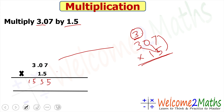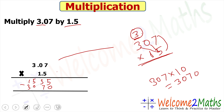Next, we multiply 307 by 1, but since 1 is in the tens place, we actually multiply 307 by 10, which gives 3070. Now we add the two partial products: 1535 plus 3070. Adding: 5 plus 0 is 5; 3 plus 7 is 10, write 0 carry 1; 5 plus 0 plus 1 is 6; 3 plus 1 is 4. So the product is 4605.